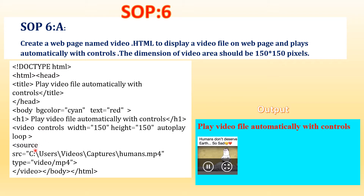To embed the video, we use a tag called video. We can use the SRC attribute or a source tag — here I've used the source tag with the SRC attribute. Video controls are used because it should play automatically with controls. The width is 150 and height is 150. Autoplay is used so the video starts playing as soon as it is ready. The source tag includes the file path and type: video/mp4. Then close the video tag.